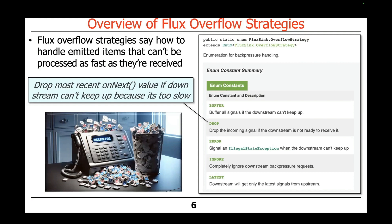The next approach is the drop approach. This is basically an indication to the framework to drop the most recent on-next value if the downstream can't keep up with the rate of events because it's too slow. This is pretty much like having a voicemail box on your phone which will drop voicemails once your mailbox is full. So that's probably a good approximation to think of for this.